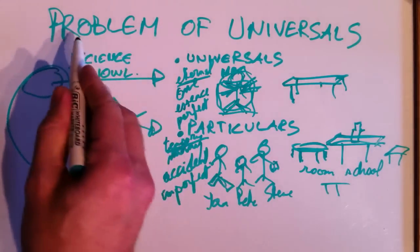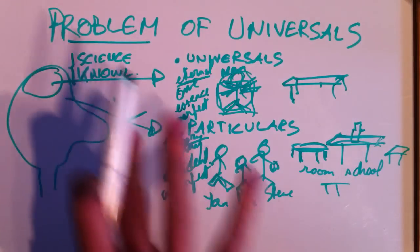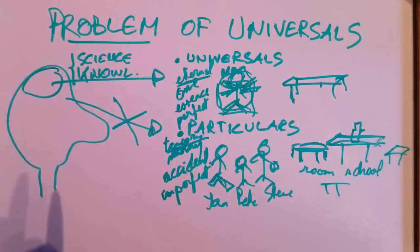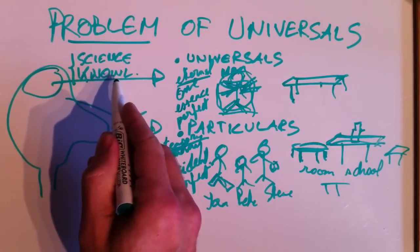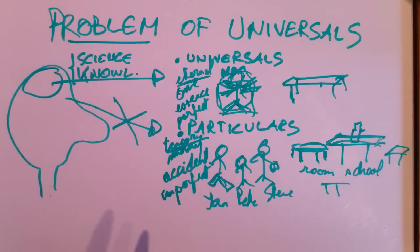Okay, now, what is the problem of universals? Because here I said something about the importance. I mean, knowledge is about universals. But what is the problem?